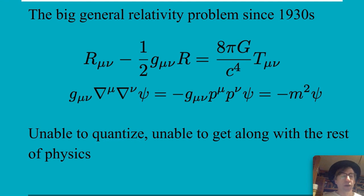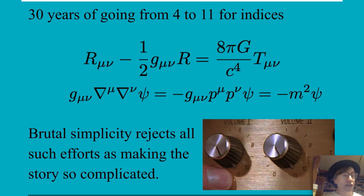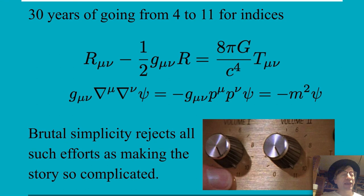So what have we been doing recently? Over the last 30 years, we've been going from like four indices to 11 — just like Spinal Tap. Imagine taking the Klein-Gordon equation up to 11. That's got to be insane. And then you have to compactify it. For brutal simplicity, we're not going to say where it's wrong; we're just saying it's too complicated. Those two equations in four dimensions are hard, and you're going to bring at least one of them up to 11? No, thank you.